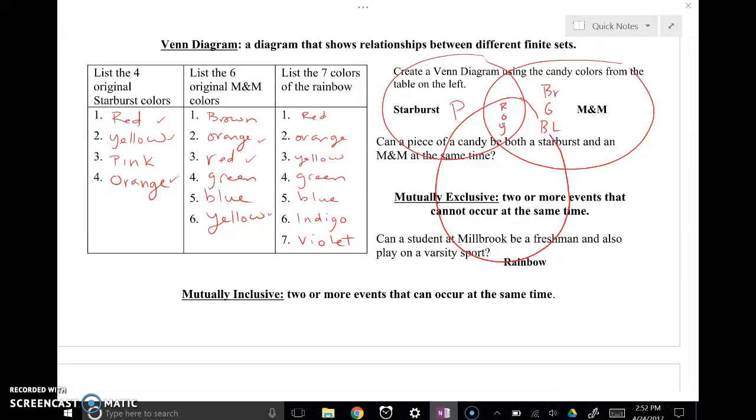Now, what are colors that show up on maybe the Starburst and rainbow, but not in M&Ms? Well, pink isn't in the rainbow, but red, yellow, orange, that is the overlap, and we already listed those. So we don't have anything in this area that happens just between Starburst and rainbow.